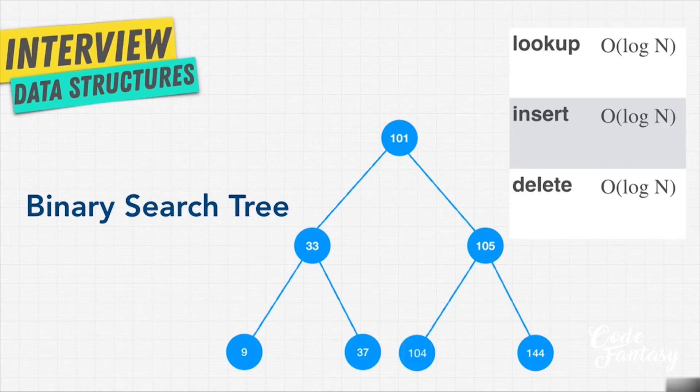When it comes to binary search trees, these are the rules. One, all child nodes in the tree to the right of the root node must be greater than the current node. That means if I keep going to the right, the number or the value of the node constantly increases. You see over here, I go from 101, 105, 144. If I keep going to the right, let's say here, 33 to 37, that is increasing.